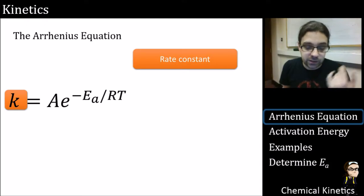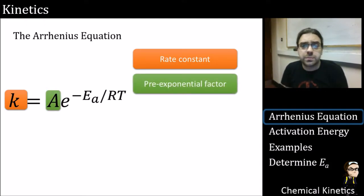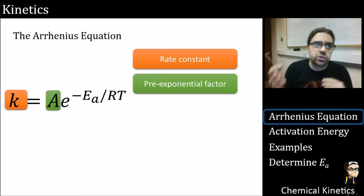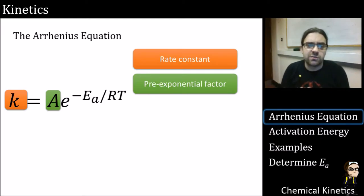We've done rate constants to death in the last several lectures. Now we're going to apply it in a new way. And then there's the pre-exponential factor, this capital A. This at the moment, as far as you're concerned, is just a factor that converts this neat little bit of theory here to the rate constant. It's just kind of a fudge factor.